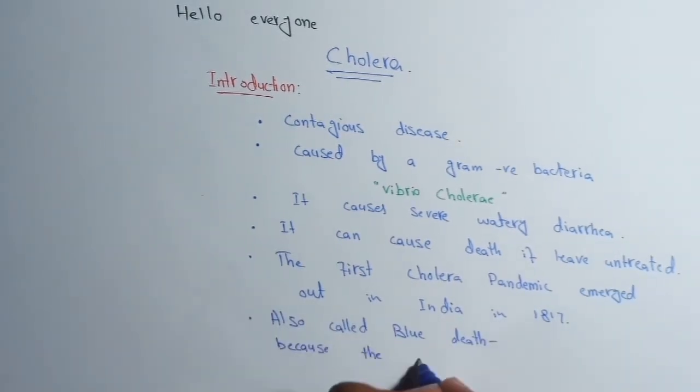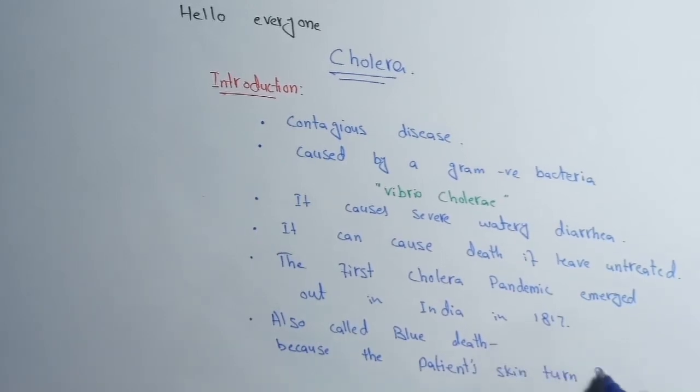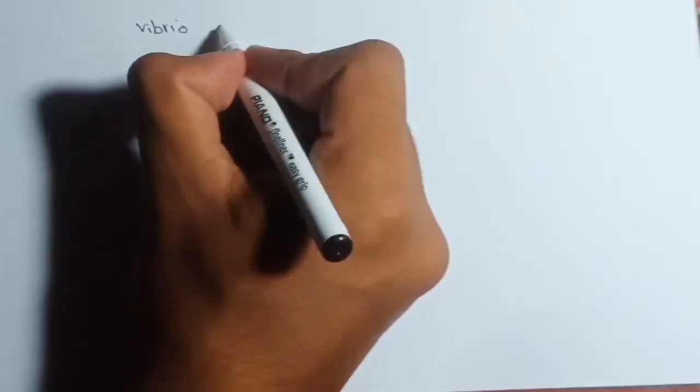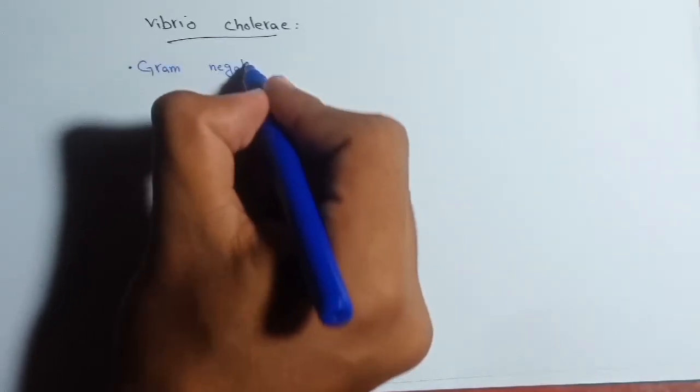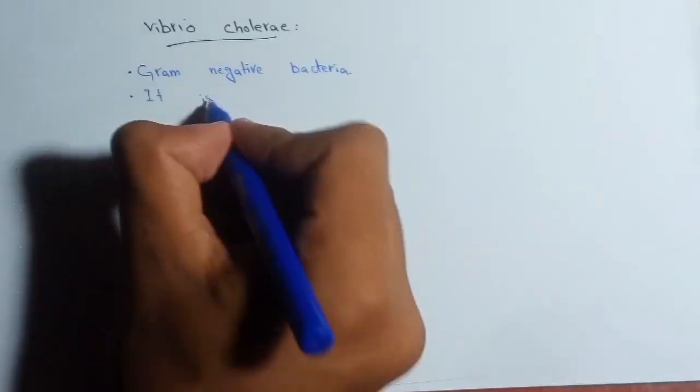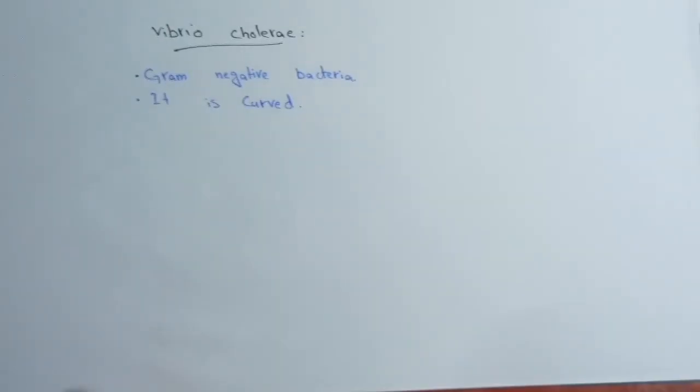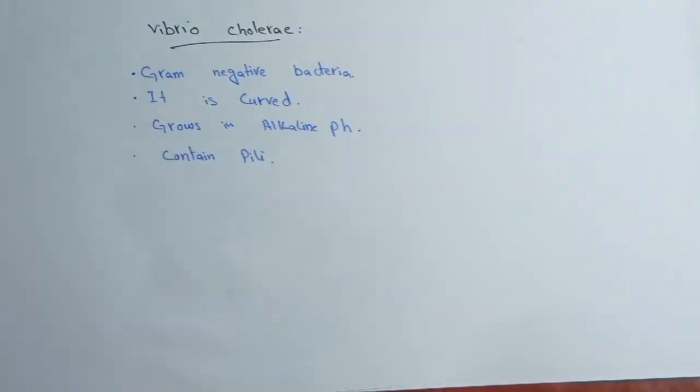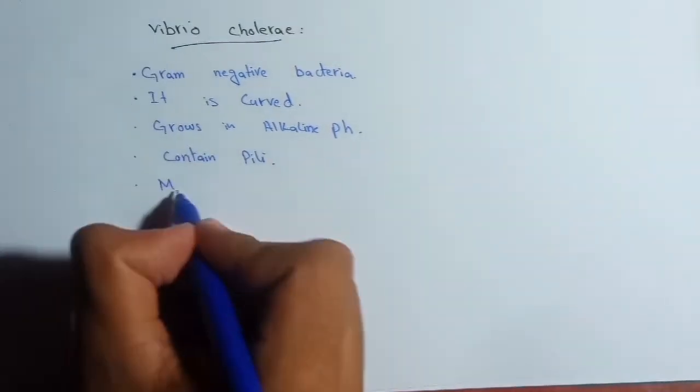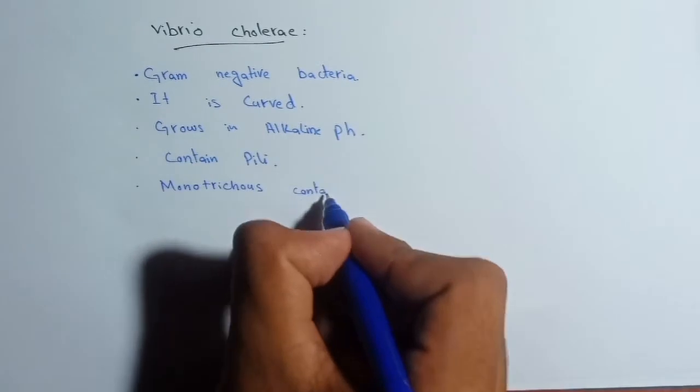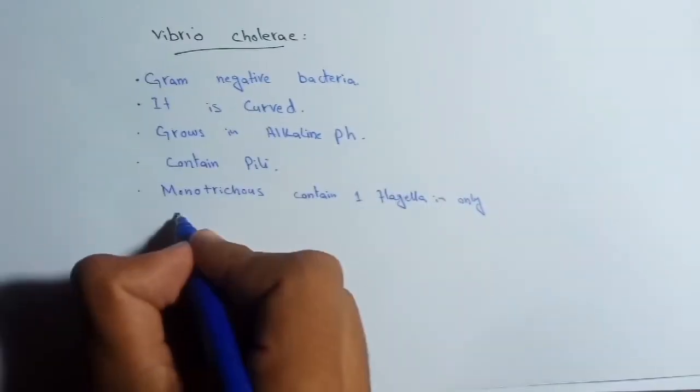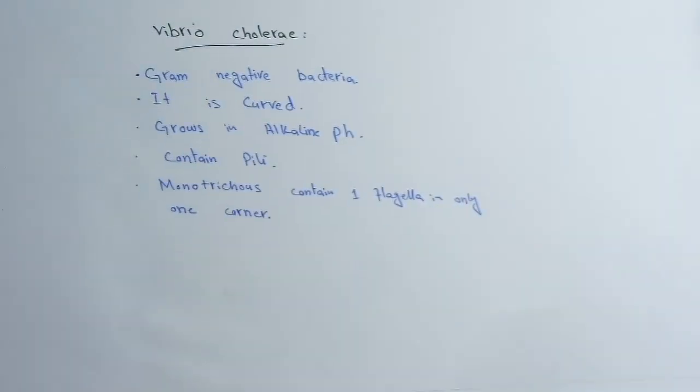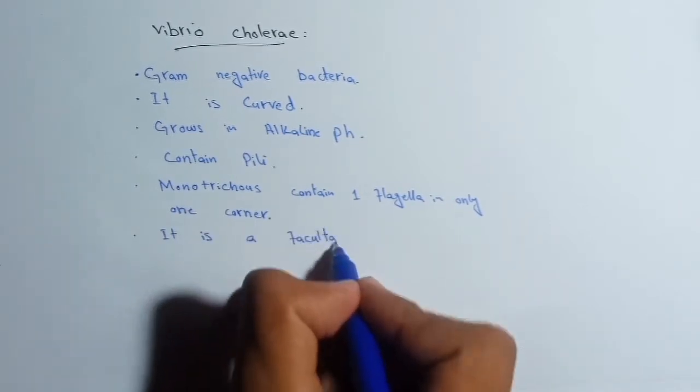Now we will study Vibrio cholerae, which causes cholera. V. cholerae is a gram-negative bacteria and it is curved in structure. It grows best in alkaline pH compared to acidic pH. V. cholerae contains pili on its structure and it is monotrichous, meaning it contains only one flagellum that is present on its one corner.